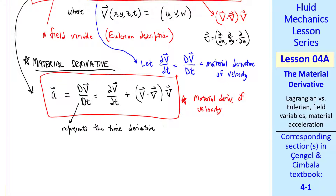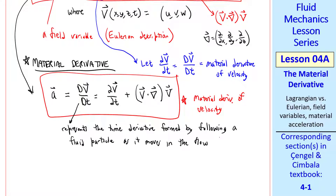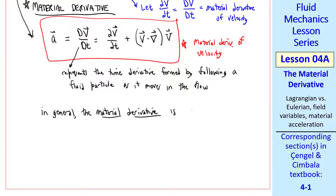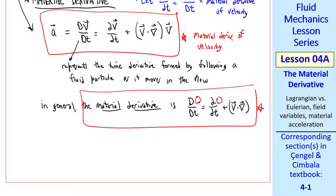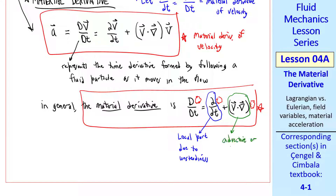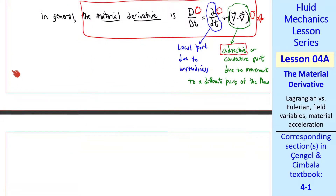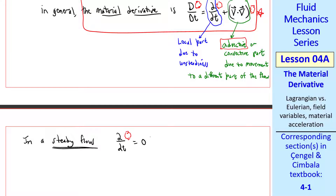Although we derived this material derivative for velocity, the material derivative itself can operate on any fluid property. So in general, the material derivative is D/Dt of something equals ∂/∂t of that something plus the operator (v·∇) of that something. The first term is the local part due to unsteadiness, and the second part is the advective or convective part due to movement to a different part of the flow. I prefer the word advective instead of convective, since convective is often associated with heat transfer. Notice that in a steady flow, ∂/∂t is zero, so the local part is zero, but D/Dt of whatever can still be non-zero even in a steady flow.